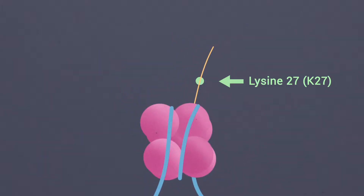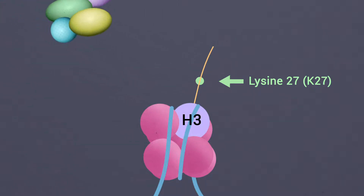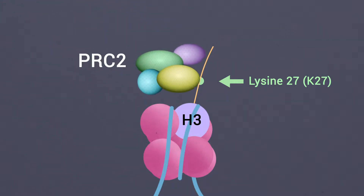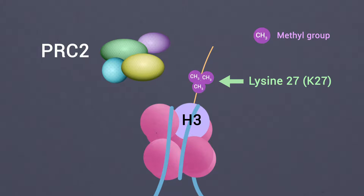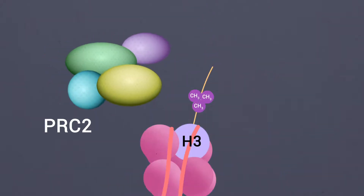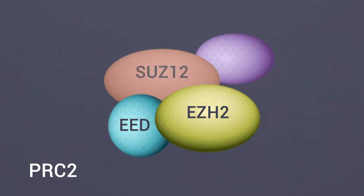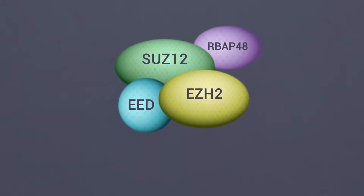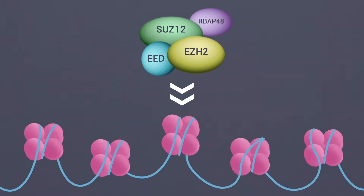Trimethylation of lysine-27 on histone H3, catalyzed by Polycomb Repressive Complex II or PRC2, leads to gene silencing of developmental and self-determining genes within multicellular organisms. All four core PRC2 subunits — EZH2, EED, SUZ12, and RBAP46/48 — have been proposed to contribute to nucleosome binding.